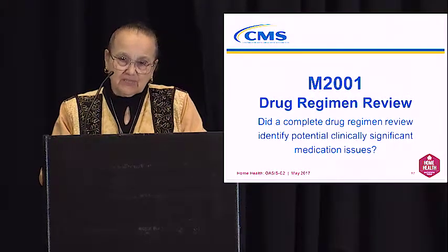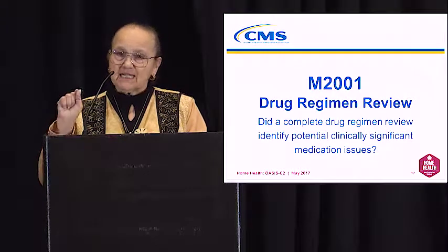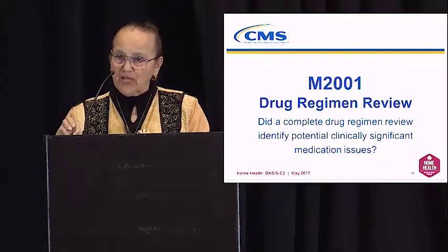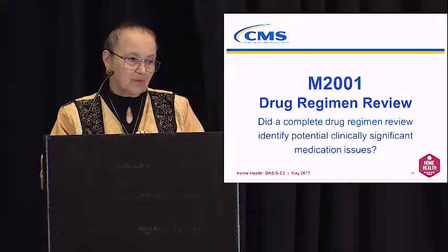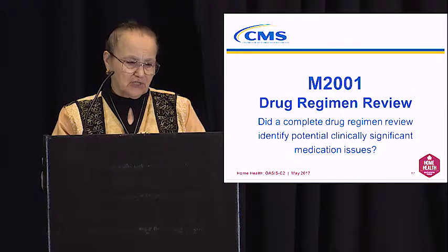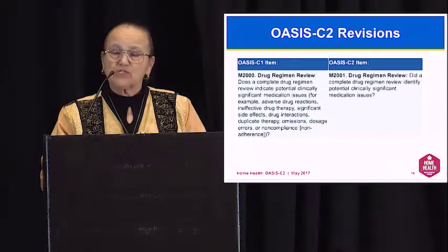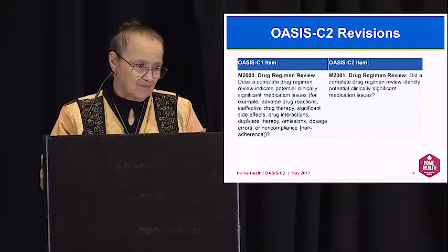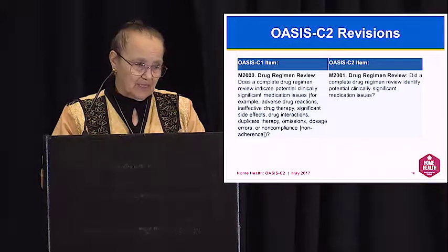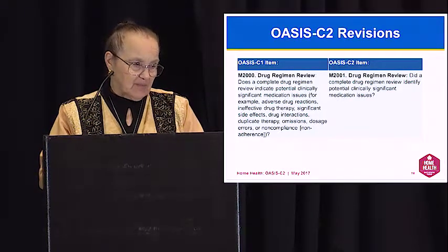Now we're going to take a look at these questions and define the different components. It is those definitions that will help to determine which episodes are included in the numerator and the denominator. Question 2001 is: did a complete drug regimen review identify potential clinically significant medication issues? If the data is missing on any of these items needed to calculate the numerator, that patient episode will not be included in the numerator count. You would enter a dash to indicate missing information, but the patient would still be included in the denominator count.